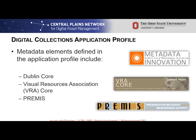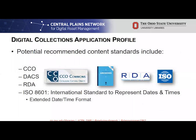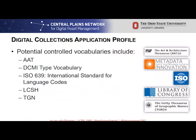In addition to the Application Profile, we also recommended to our stakeholders to utilize established content standards and controlled vocabularies. Examples of potential recommended content standards include CCO, DAX, RDA, the International Standard to Represent Dates and Times, and the Extended Date-Time Format. Examples of potential controlled vocabularies include Art and Architecture Thesaurus, DCMI Type Vocabularies, International Standards for Language Codes, the Library of Congress Subject Headings, and the Getty Thesaurus for Geographic Names. Since multiple special collection units are ingesting content into the Master Objects repository, we needed an Application Profile that was robust but also flexible for a wide variety of stakeholders.